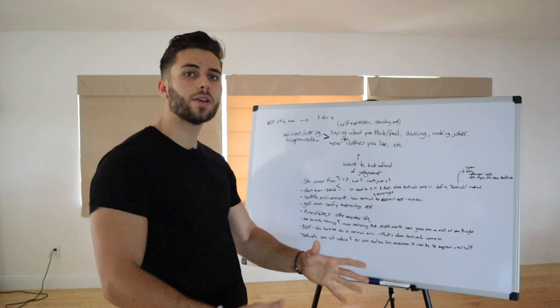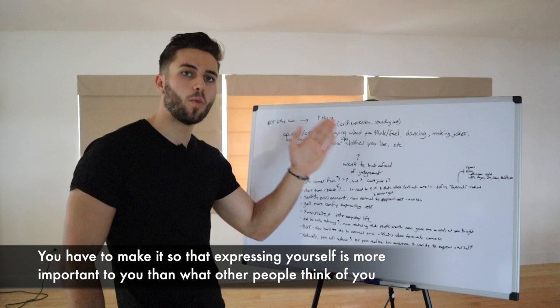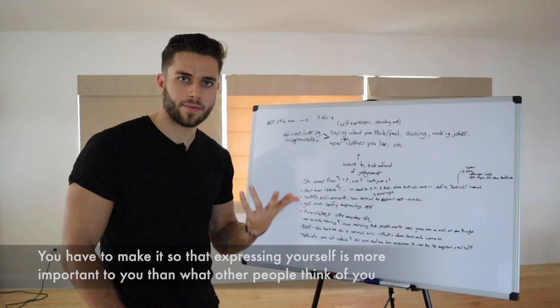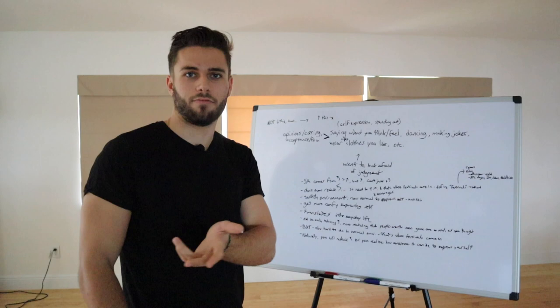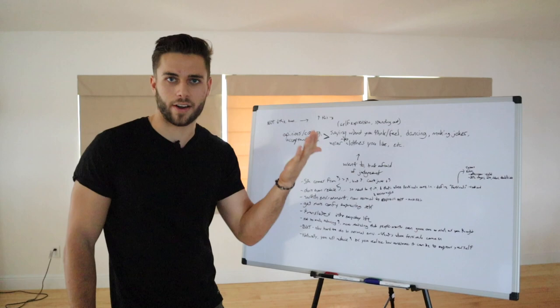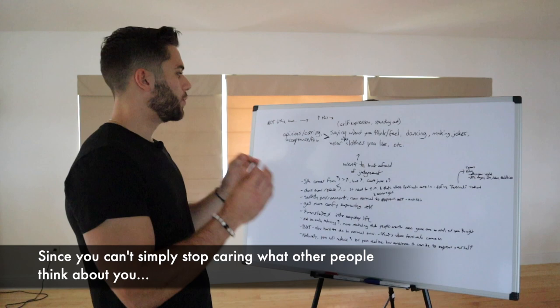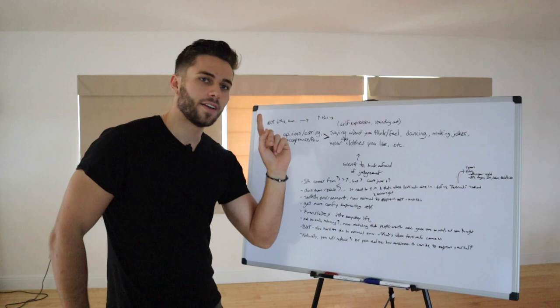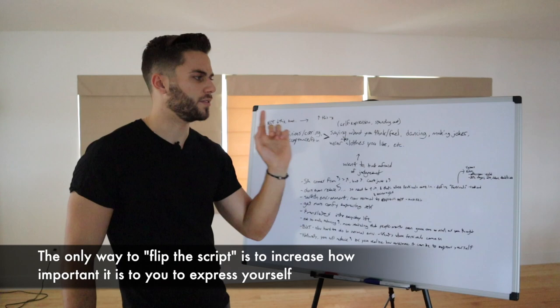So what you have to do is you somehow have to flip the script. You have to make it so that expressing yourself is more important to you than what other people think. So a lot of people will naturally say, okay, then just don't care so much what people think of you. But that's obviously completely wrong, because if you could simply talk yourself out of it like that, you would have done so already. It's extremely hard to just think or talk yourself out of caring so much what other people think. So instead, mathematically speaking, the only other solution to this equation to flip around that greater than sign is to increase how important it is to you to express yourself, to say and think what you feel, to dance your heart out, and wear the craziest clothes, whatever the case may be.